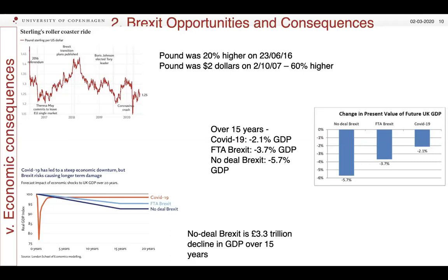The bottom left-hand diagram sets out how Covid-19 has led to a steep economic downturn, but that Brexit risks causing far longer damage, demonstrating how these effects play out over the next 15 years. The sum effects of this is that a no-deal Brexit will lead to a £3.3 trillion decline in GDP over the next 15 years. The British economy is worth about £2.2 trillion, so that's more than the value of the current British economy that will be lost in the next 15 years. This of course is a disaster.